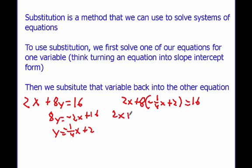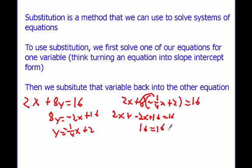So, 2x plus 8 times negative one-fourth is negative 2x, and 8 times 2 is 16. So plus 16 equals 16. Cancel these out and we end up getting 16 equals 16. This is what it means to substitute: I solve for one variable and then I just plug it back into the other.